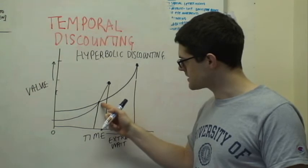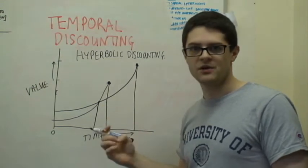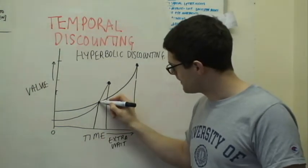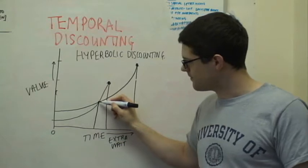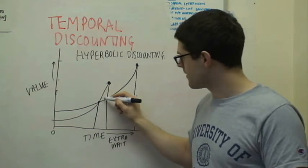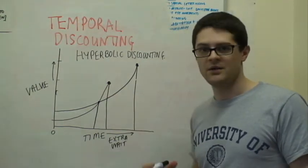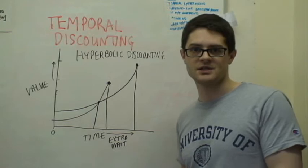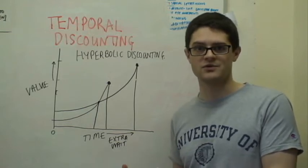And that point is called the point of indifference. The exact point there, the values are basically the same and I don't care which option I go for. But after that point, what I've done is to reverse my preferences. So that's an important thing, the preference reversal.